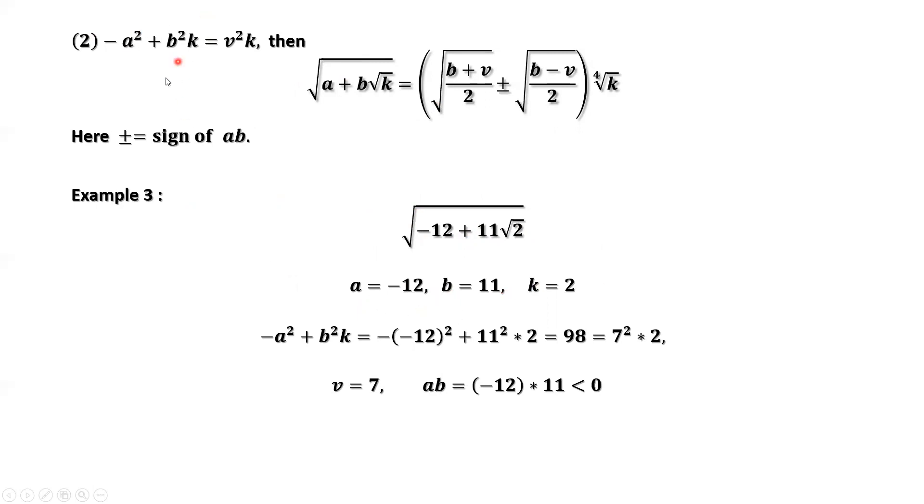Check the left-hand side. Plug in those numbers. Simplify, we have 98. 98 is 49 times 2. 49 is 7 squared. Why do we need 2? Because we need the k. k in our case is 2. So here you have to have a 2.